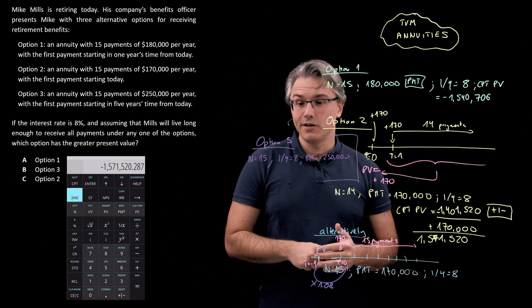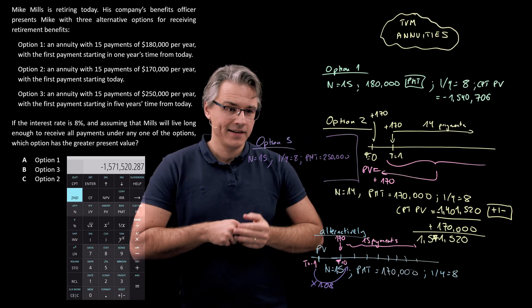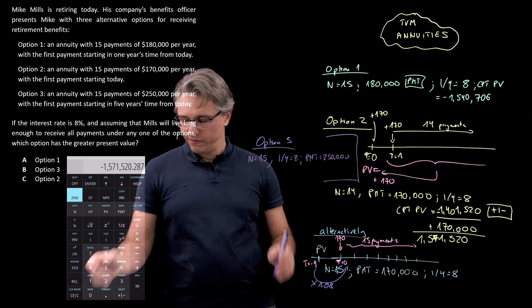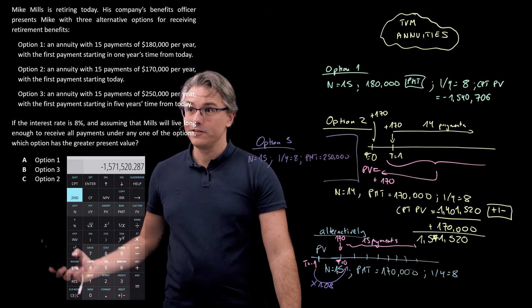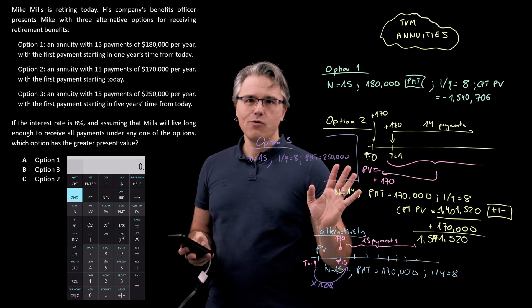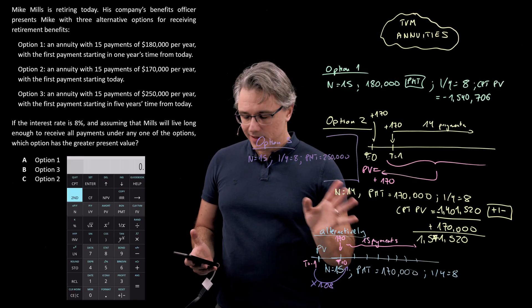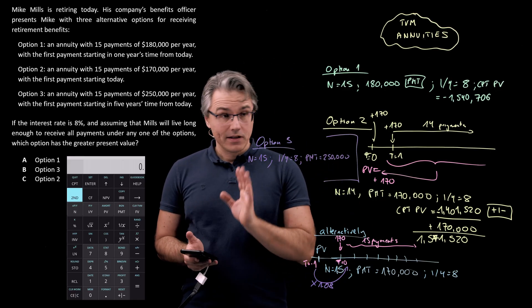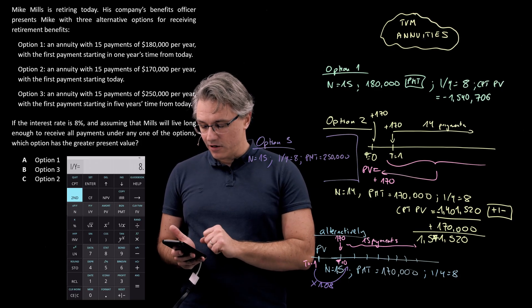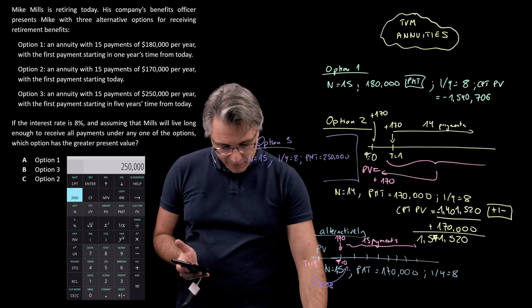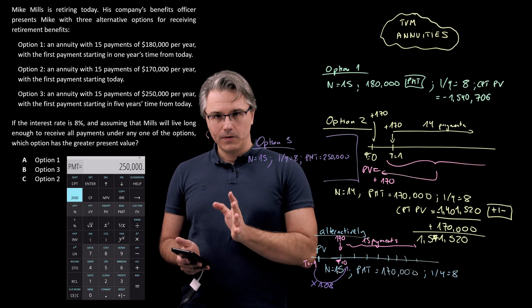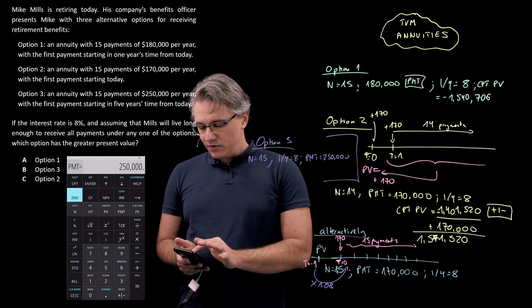If you're worried about confusing stuff on your calculator, why not just clear the time value of money worksheet. Let's get rid of this, clear the TVM. 15 for N, 8 for I over Y, now $250,000 for our PMT inputs. And I'm going to compute PV.